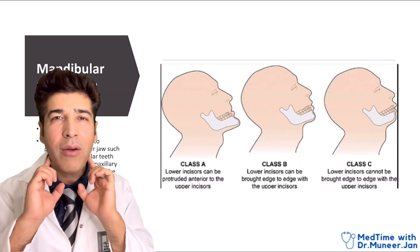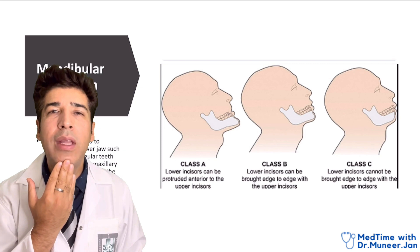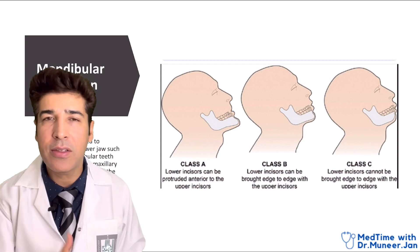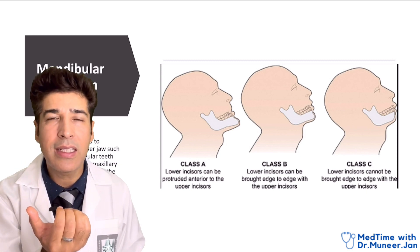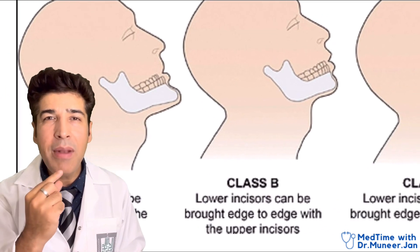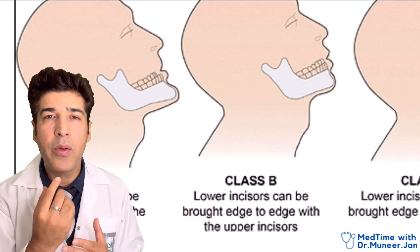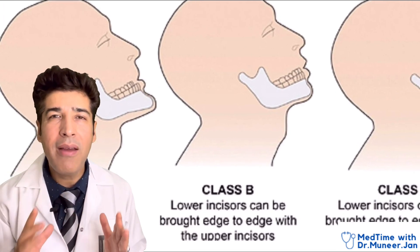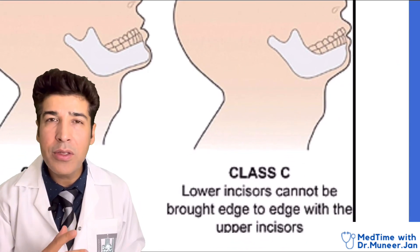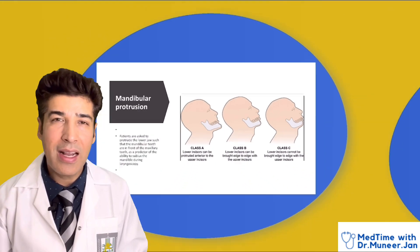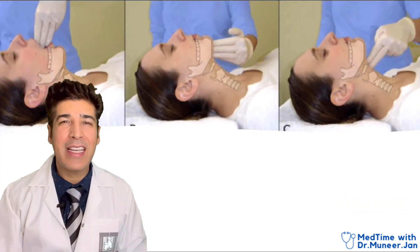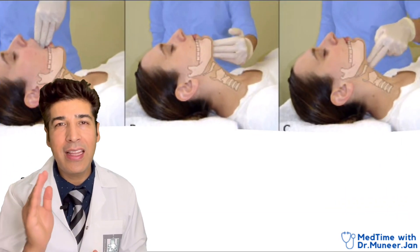Assess mandibular protrusion — the ability of the patient to move the lower jaw forward beyond the upper incisors. If the patient can do this, it is Class A. If the lower incisors are at the same level as the upper incisors, it is Class B. If unable to do so, it is Class C. In Class B and Class C, there is a possibility of difficult airway.